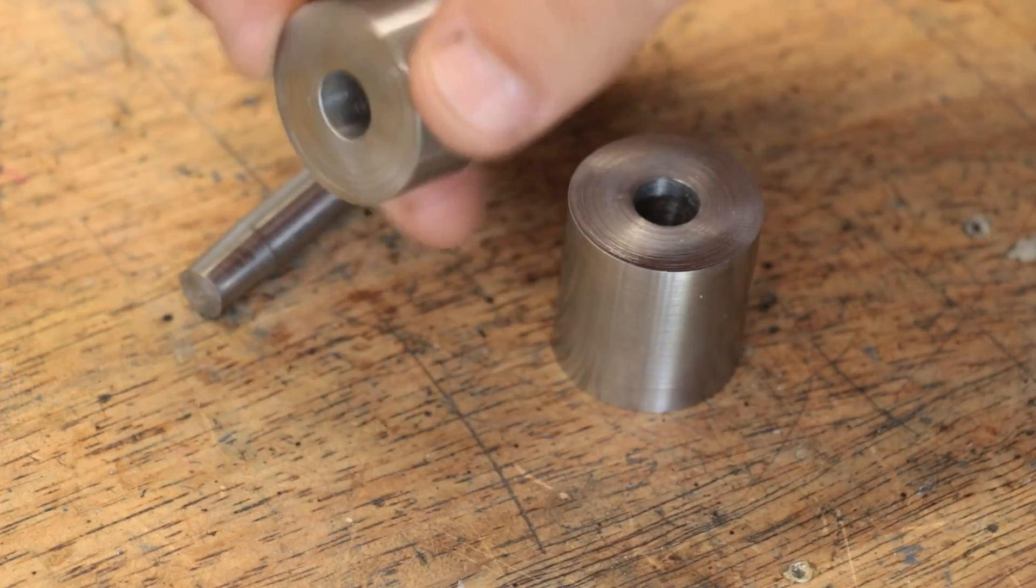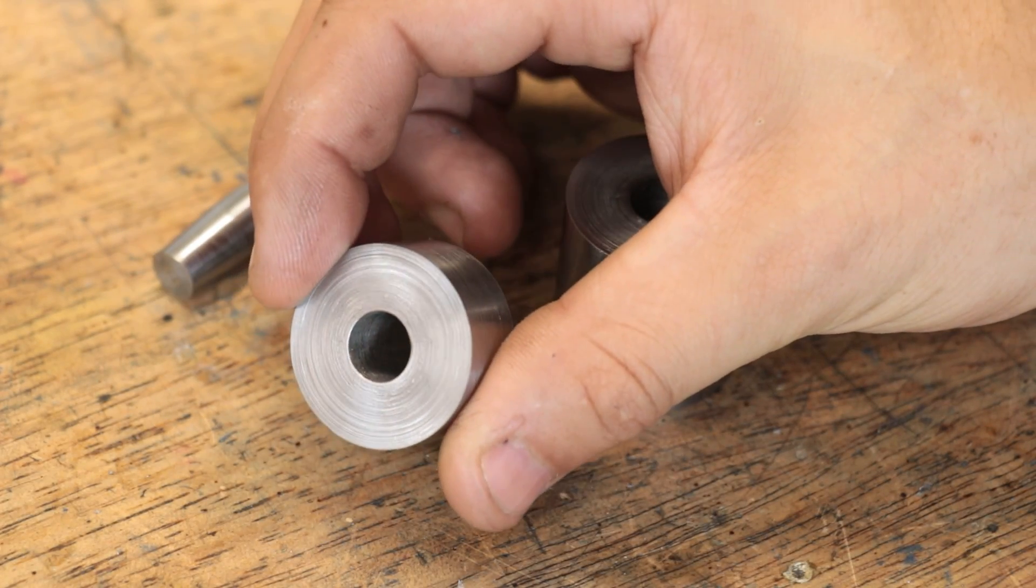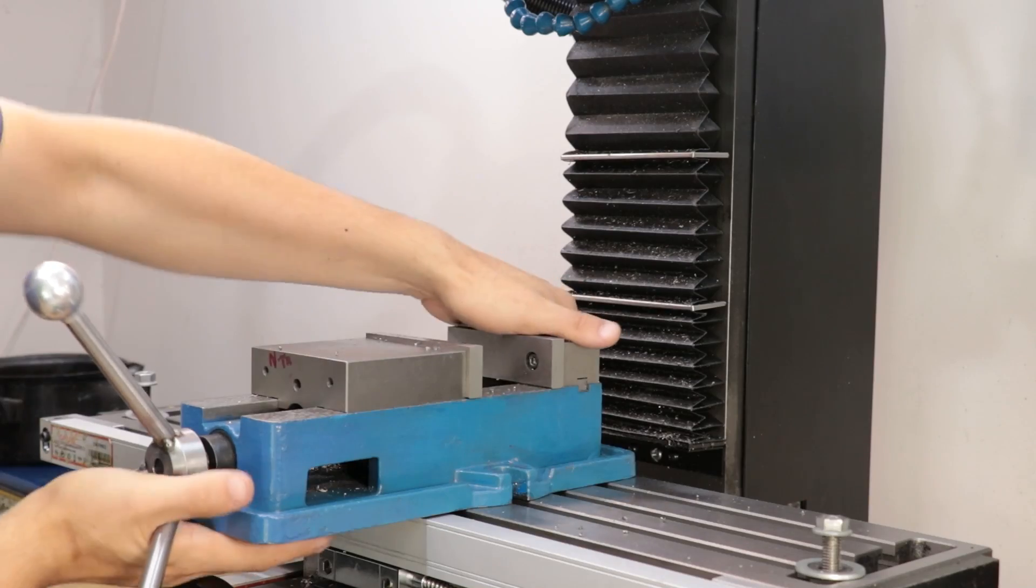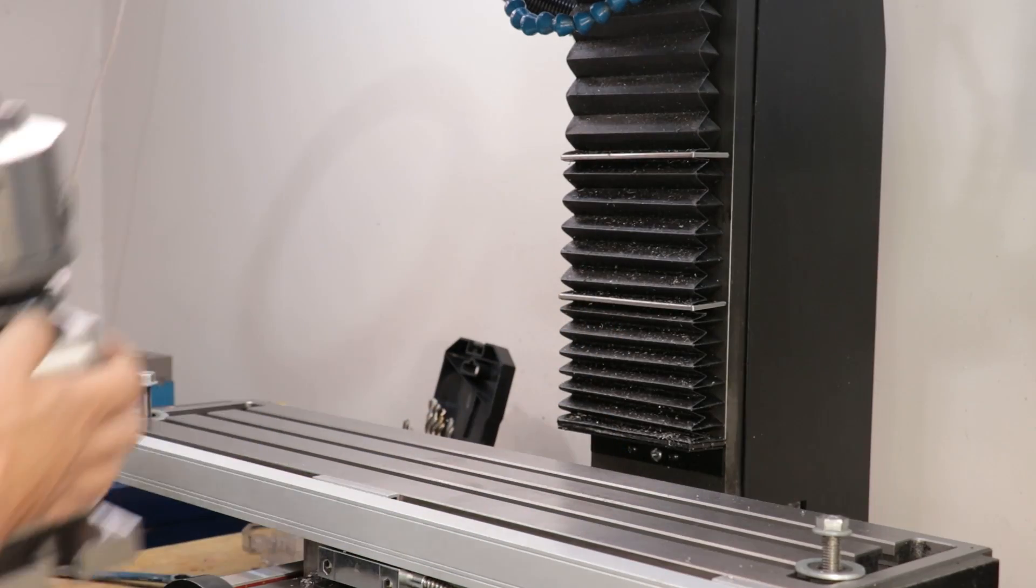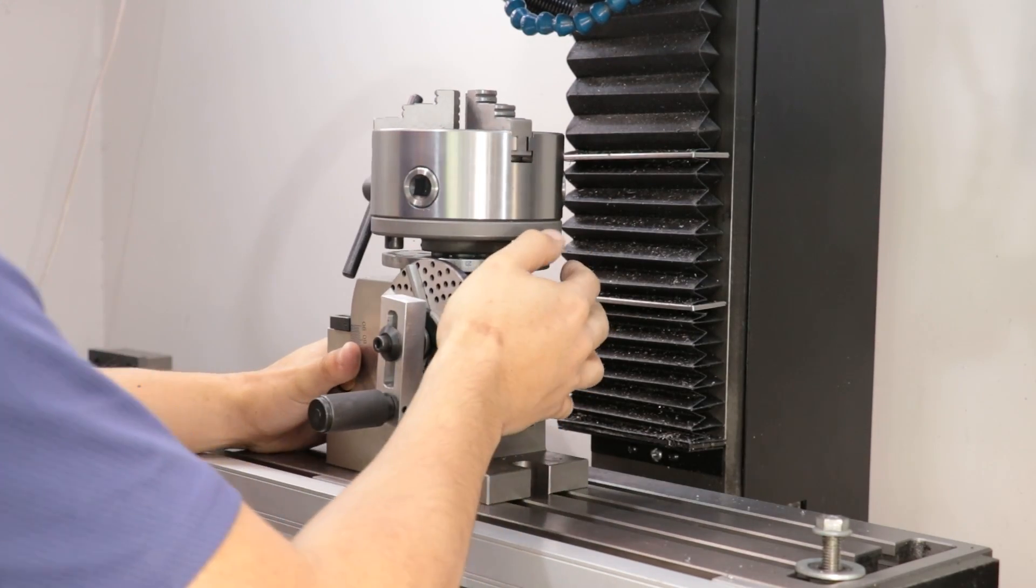The next thing I need to do is make the cuts for the pin, and this will form the ratcheting part of the ratcheting mechanism. I'll use the dividing head facing upwards to hold and index the part.